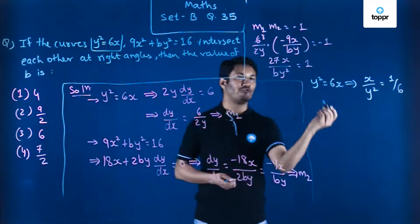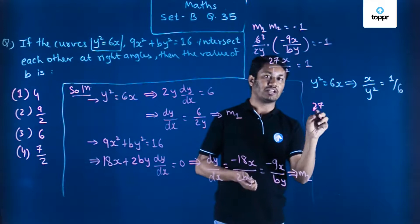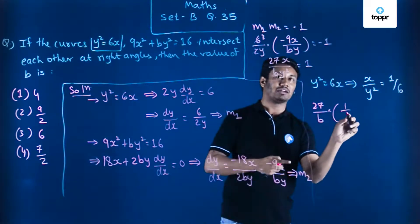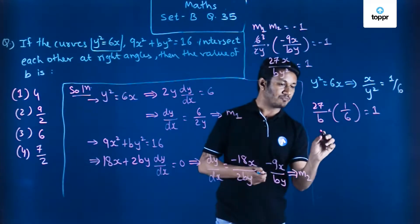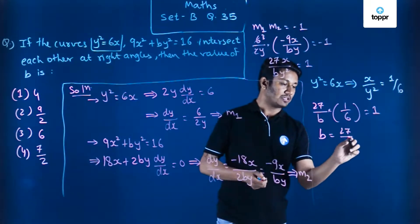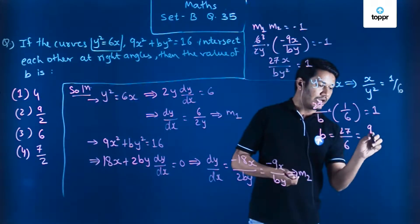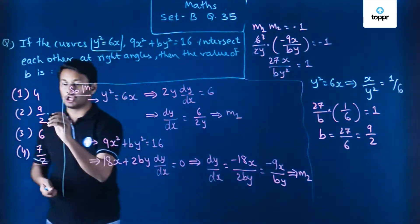So that further gives me 27/b × x/y² is nothing but 1/6, and that is equal to 1. So this becomes b is equal to 27/6, and 27/6 will be nothing but 9/2. So the value of b becomes 9/2, which is nothing but option number 2.